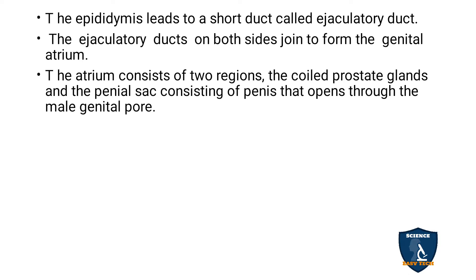The epididymis leads to a short duct called the ejaculatory duct. The ejaculatory duct is joined on both sides to form a genital atrium. The atrium has two regions: a coiled prostate gland and a penile sac. The penile sac consists of a penis which opens through the male genital pore.